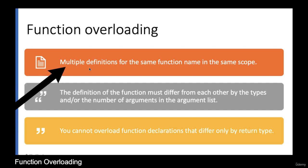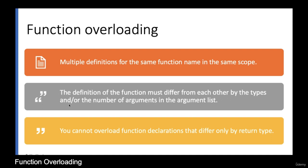One important thing to remember when creating overloaded functions: the definition of each function must be different from the others, and the type and number of arguments should also differ. Only then can you create multiple functions with the same name for different purposes. C++ uses return types and argument types to understand which function is being called. When you see the program it will become clear.